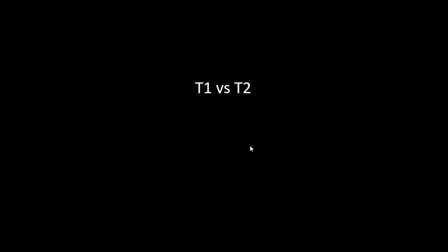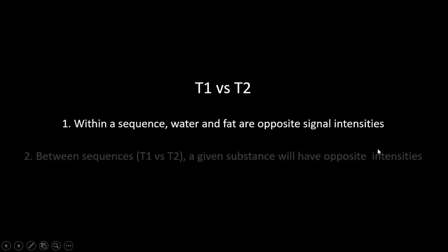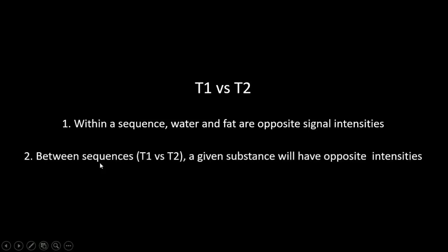T1 and T2 are very similar sequences and people get tripped up a lot with these. Between T1 and T2, there are two basic rules that differentiate the two. Number one: within a given sequence — take T1 for example — water and fat are opposite signal intensities. Number two: between sequences, T1 versus T2, a given substance — take fat for example — will have opposite signal intensities. This will make sense in a minute.